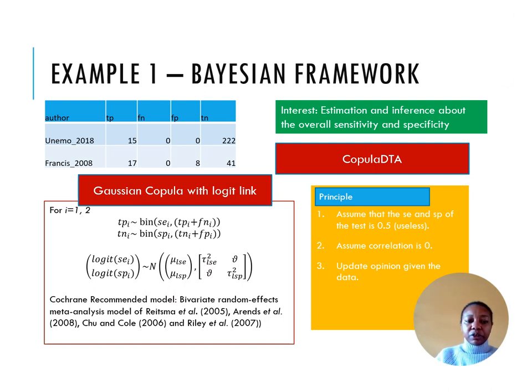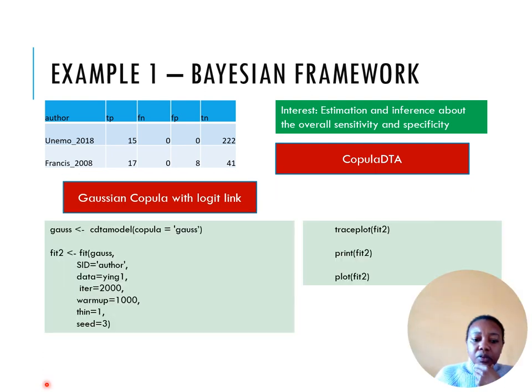To fit the recommended model, we will first need to rewrite it in terms of the Gaussian copula. We specify the Gaussian copula by passing the argument copula equal to gauss to the function cdta_model. Under the hood, the package rstan does the heavy lifting, so using function fit we will pass the job to rstan and wait.